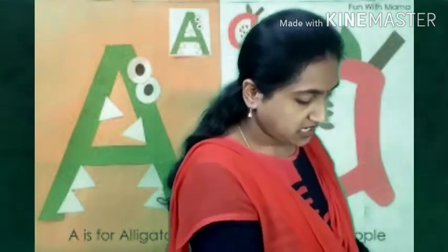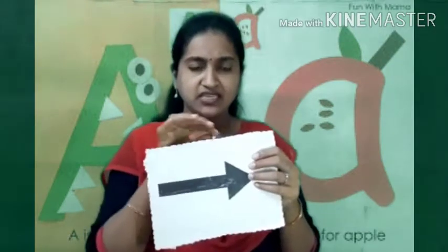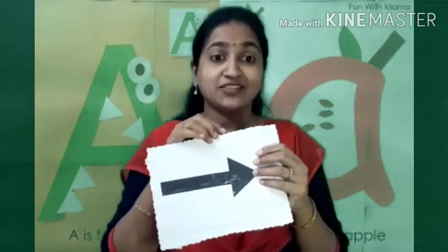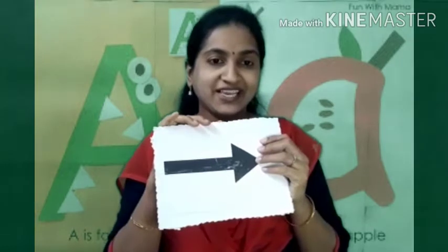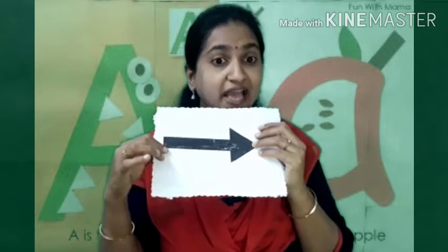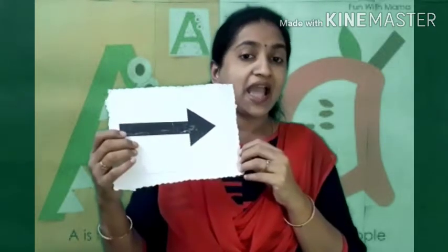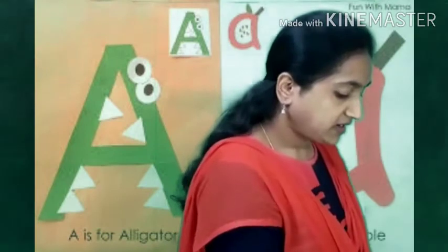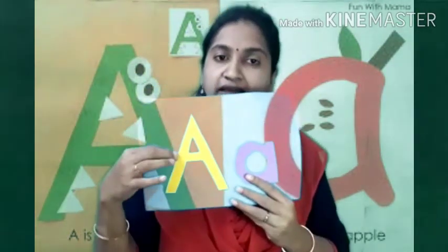Now see, what is this? Have you seen this anywhere? If you go to malls, they will be there at the exit. This is a direction. This is an arrow. It shows the direction. A, a, a, arrow. Arrow. Children, we learned today letter A. What is this? Letter A. Capital A and small a.